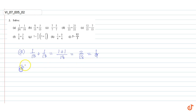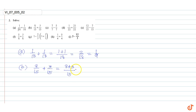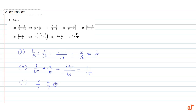Part b: 8/15 plus 3/15. Since the denominators are equal, we can write 8 plus 3 over 15, which equals 11/15.